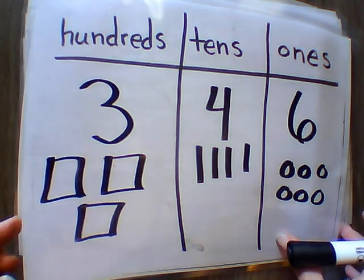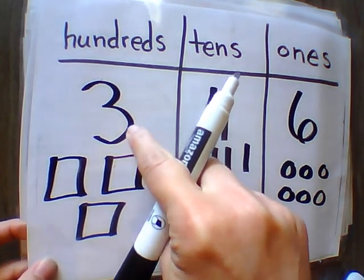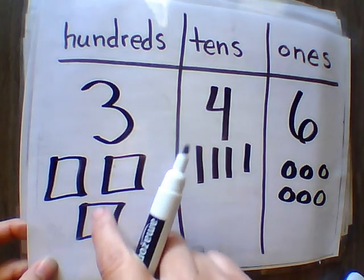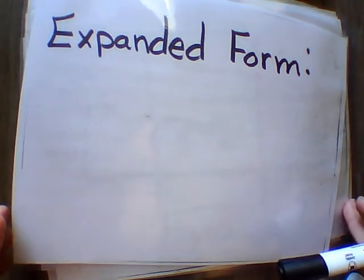Now using this, you're going to use this for your expanded form. Remember this is not three, this is 300. So 100, 200, 300, counting by hundreds. Fill in your expanded form with the number 346. Go!